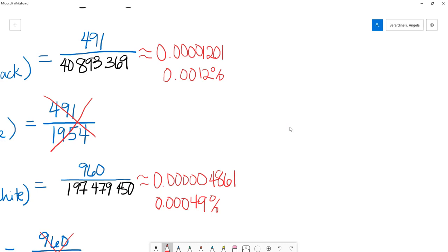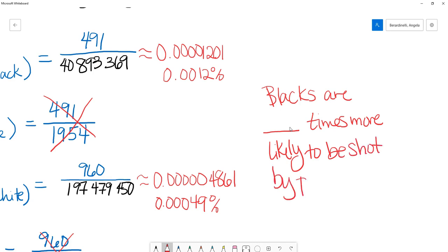if we want to say that blacks are some number of times more likely to be shot by police than whites, we have to take the bigger number divided by the smaller number. And this is the bigger number. These are both very small percentages, but this number is bigger than this number. So it is more likely for blacks to be shot by police than whites.